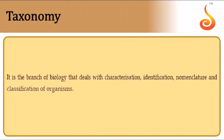Taxonomy deals with identification, classification, and nomenclature. First you identify organisms, then place them in a particular group based on observable characters, and finally give them a name through nomenclature.